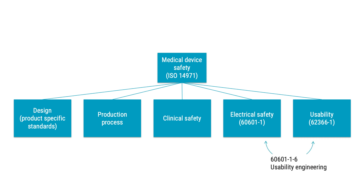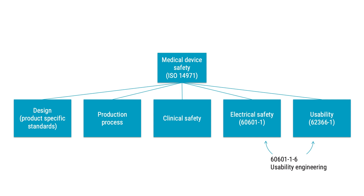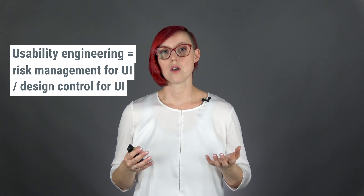As a side note, there is also a standard on usability in the 60601-1 series of standards — that is the 60601-1-6. This standard is similar to the first edition of the 62366-1 standard. Remember, this course is on the second edition and the amendment from 2020, so please try not to get confused. Having said that, you could see usability engineering as risk management focusing on the user interface, or design control focusing on the user interface.